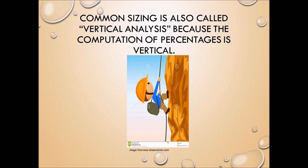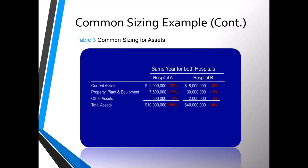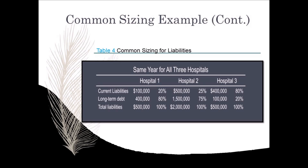Sometimes common sizing is also called vertical analysis because the computation of percentages is vertical. Common sizing converts numbers to percentages so that comparative analysis can be performed. The worksheet below shows the assets of two hospitals. Current assets of Hospital A is $2,000; 2,000 divided by total assets of 10,000 equals 20%. Therefore, the common sizing for current assets is 20%. Table 4 shows an example of common sizing for liabilities, illustrating how common sizing allows a comparison of liabilities for three different hospitals.